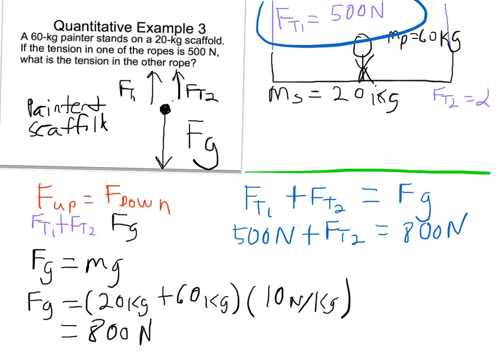If I solve this for FT2, move the 500 over, I get FT... Sorry, let me slow down. When I say move the 500 over, I do that by subtracting 500 from both sides. Because here, on the left, it is added. So when I subtract 500 from both sides, I get FT2 is 300 newtons. Which is the answer to my question.